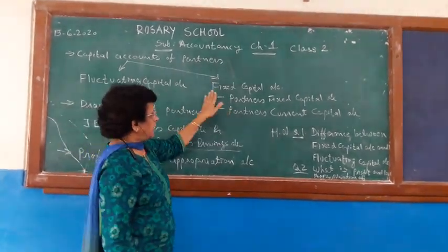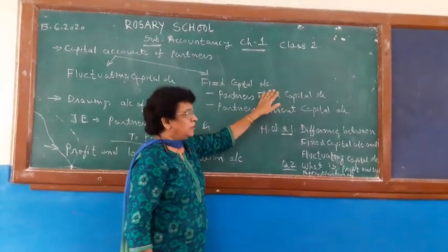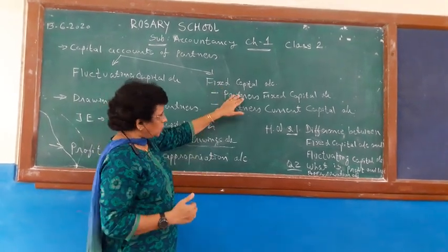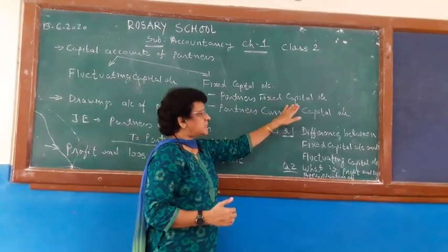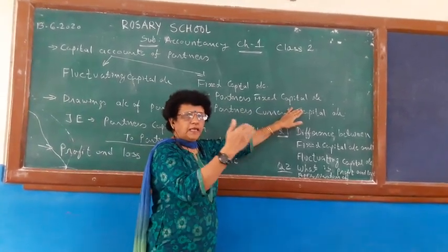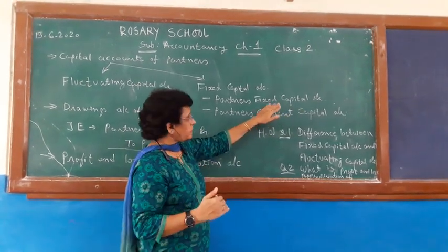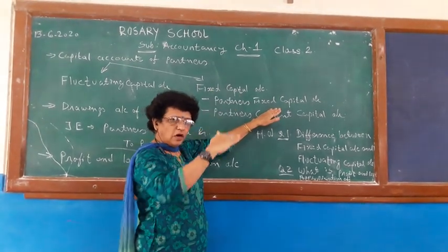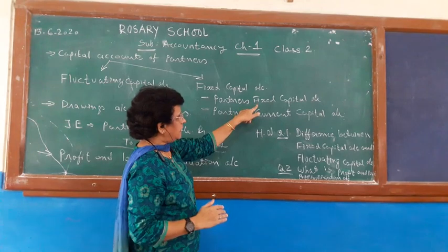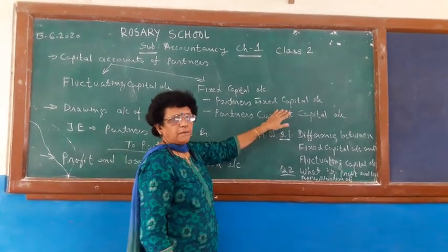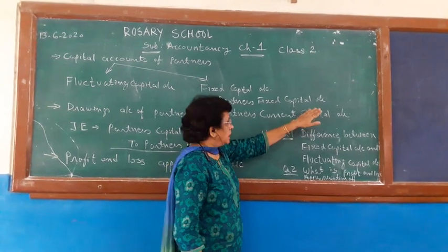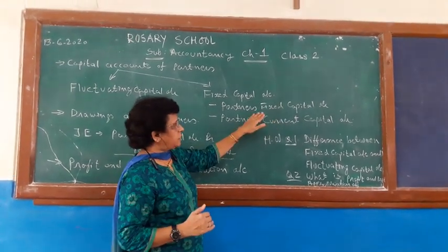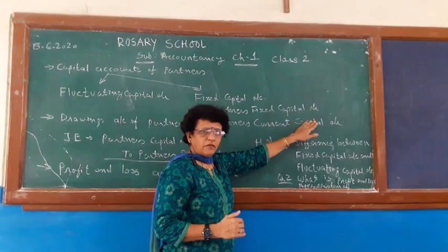The second type is the Fixed Capital Account. The word 'fixed' itself indicates that two separate accounts are prepared. In the Fixed Capital Account, the balance normally remains the same. Only when partners decide on a permanent increase or decrease in their capital does the figure change. This Fixed Capital Account always has a credit balance, which is shown on the liability side of the balance sheet.